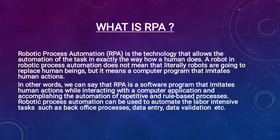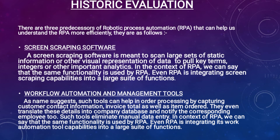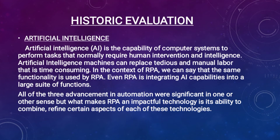We have often seen Natasha in Hike as a chatbot that works on RPA. Talking about historic evolution, robotic process automation has three predecessors. The first one is screen scraping software — software that is used to scan large sets of static information and to pull out important terms and integers. RPA also uses this functionality, for example in digital scanners.